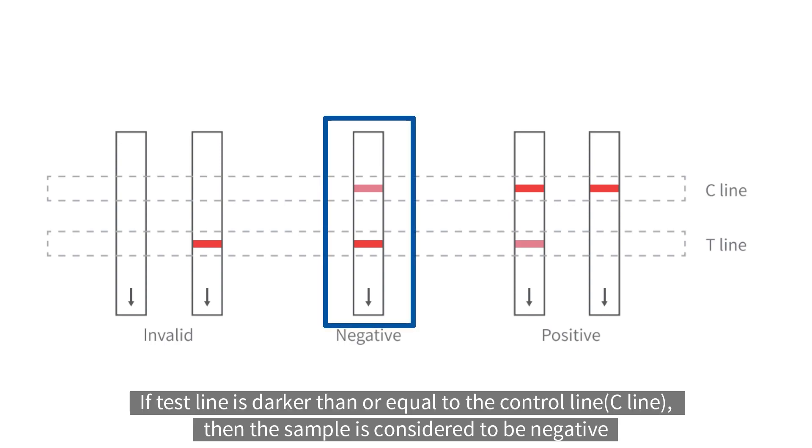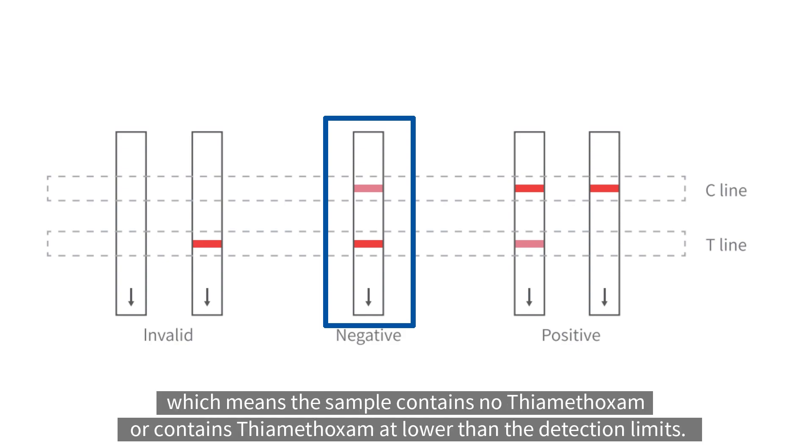If test line is darker than or equal to the control line, then the sample is considered to be negative, which means the sample contains no thiamethoxam or contains thiamethoxam at lower than the detection limits.